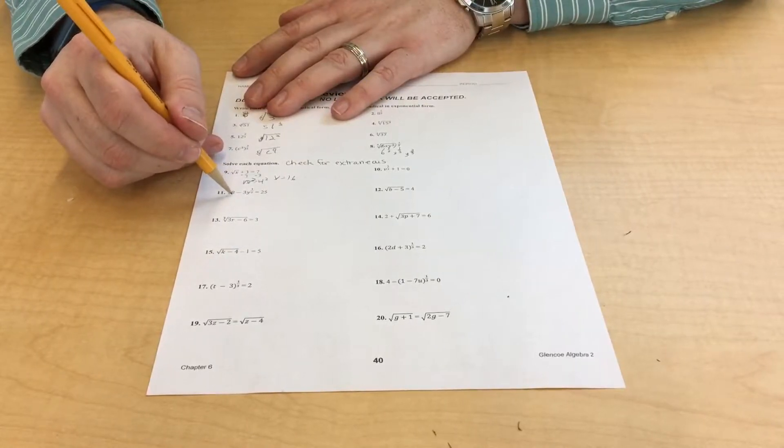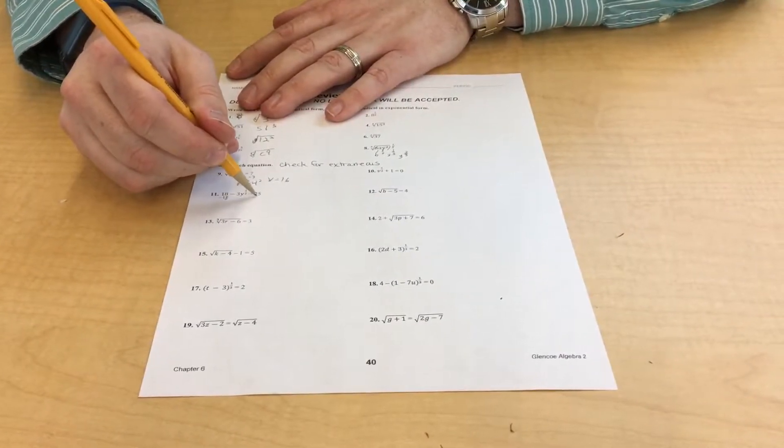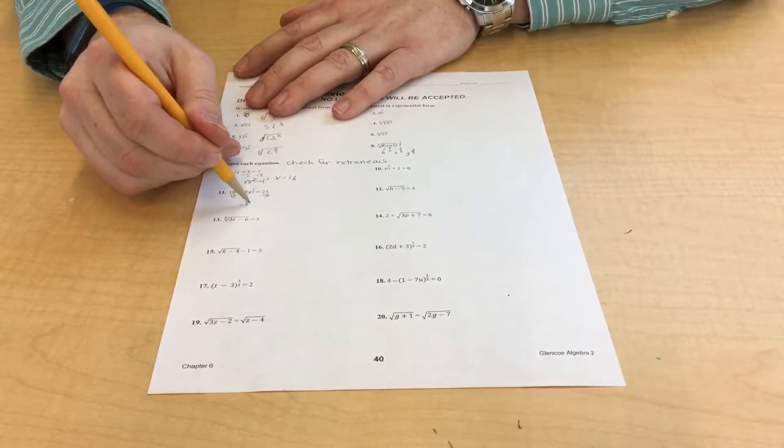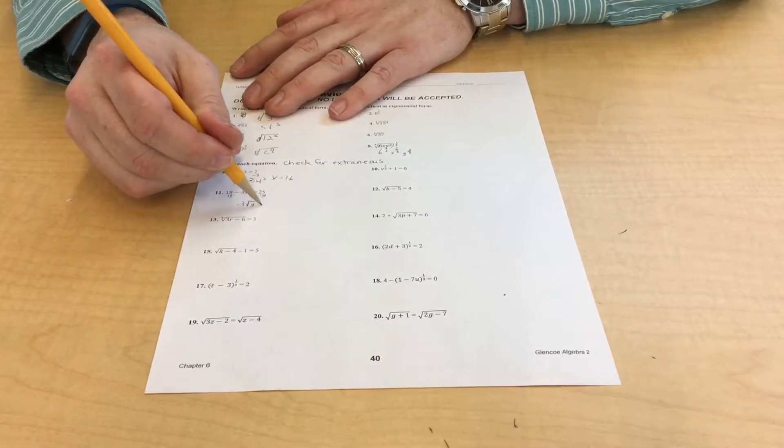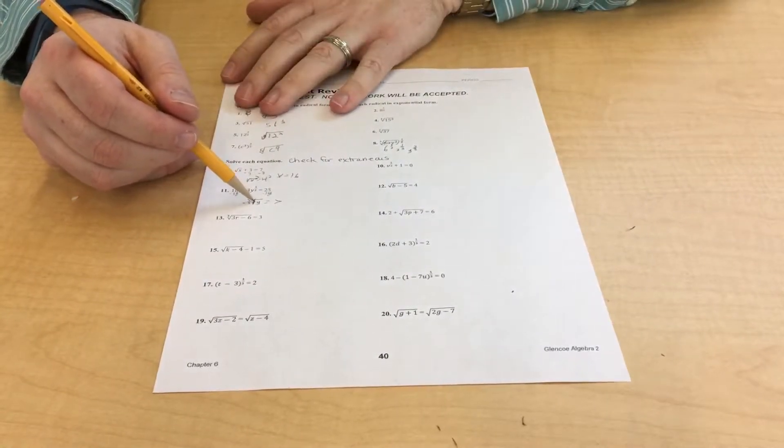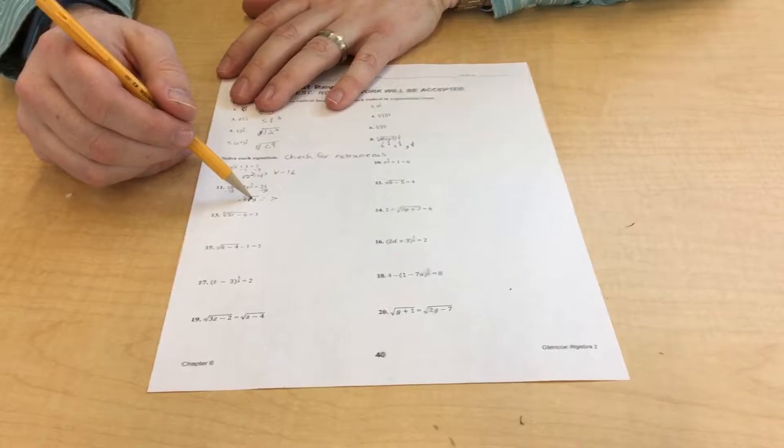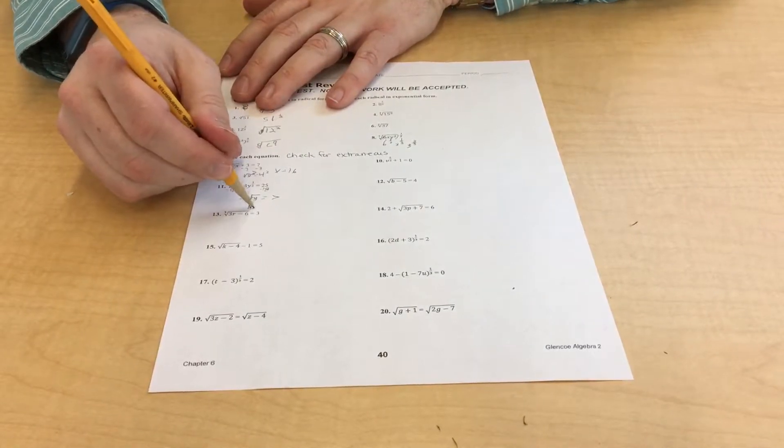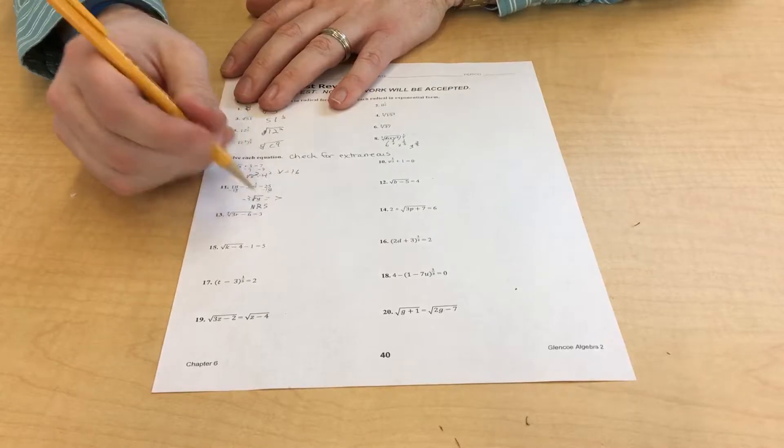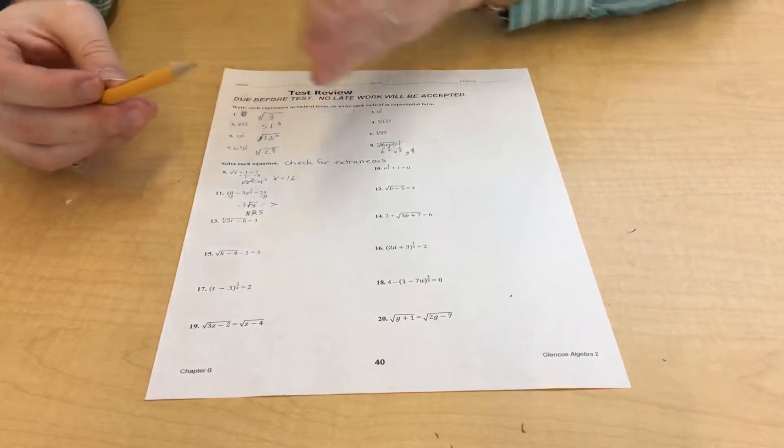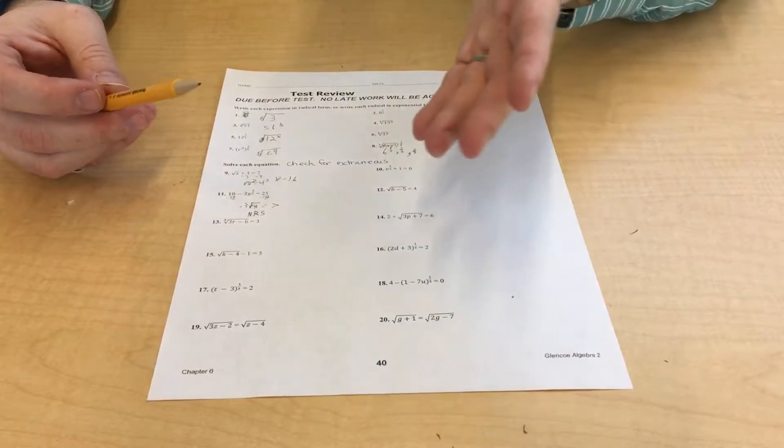On this one, you subtract 18. You subtract 18. You come up with negative 3 times the square root of Y is equal to 7. At this point, you know everything is going to go wrong because this has to be a negative number. So I wouldn't even worry about this. I just put no real solution. It's going to be an imaginary number.